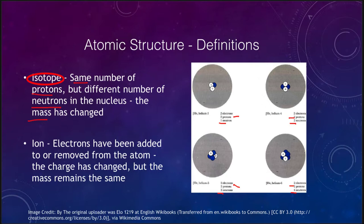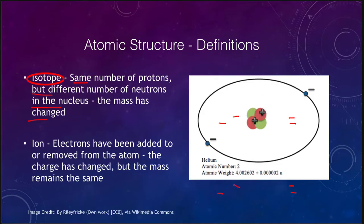Now an ion, on the other hand, is when you change the electrons. So electrons are added or removed from the atom. When you change those, then we change the charge. So the charge changes in this case. The charge has changed, but the mass is still exactly the same.